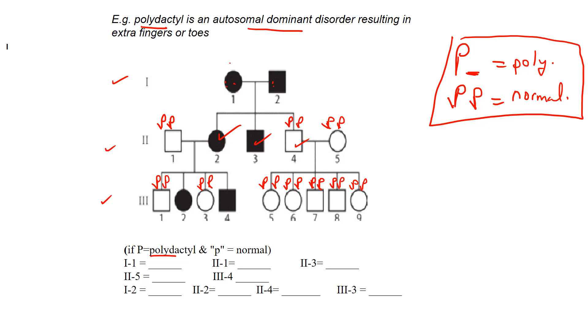Anyone that has the disorder must have at least a capital P, so we can start popping in some of those guys. These two parents, individuals I-1 and I-2, we know they're heterozygous. How do we know that? Look at the kid they had. They had a son that was normal—two little p's. Where did they come from? One must have come from each parent. So we know they're hetero, and because heteros are shaded in and have the disorder polydactyl, we know this is a dominant trait.